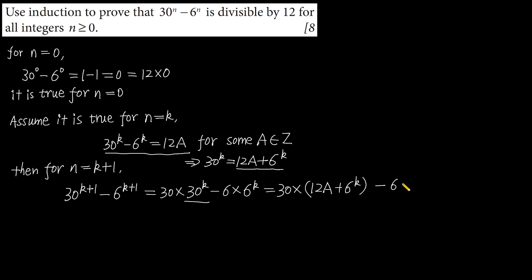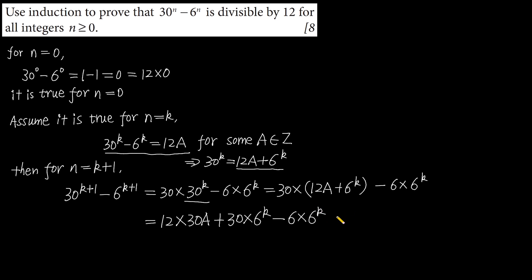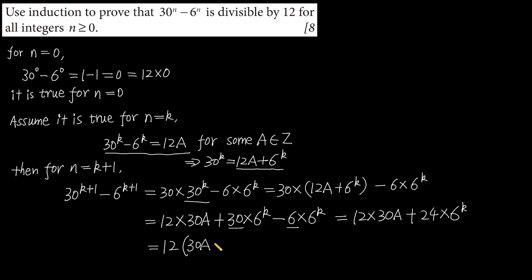This gives 30 multiplied by 12a plus 6 to the power of k, minus 6 multiplied by 6 to the power of k. Then this equals 360a plus 30 multiplied by 6 to the power of k minus 6 multiplied by 6 to the power of k. Since 30 minus 6 equals 24, we get 360a plus 24 multiplied by 6 to the power of k. Then this equals 12 multiplied by 30a plus 2 multiplied by 6 to the power of k.